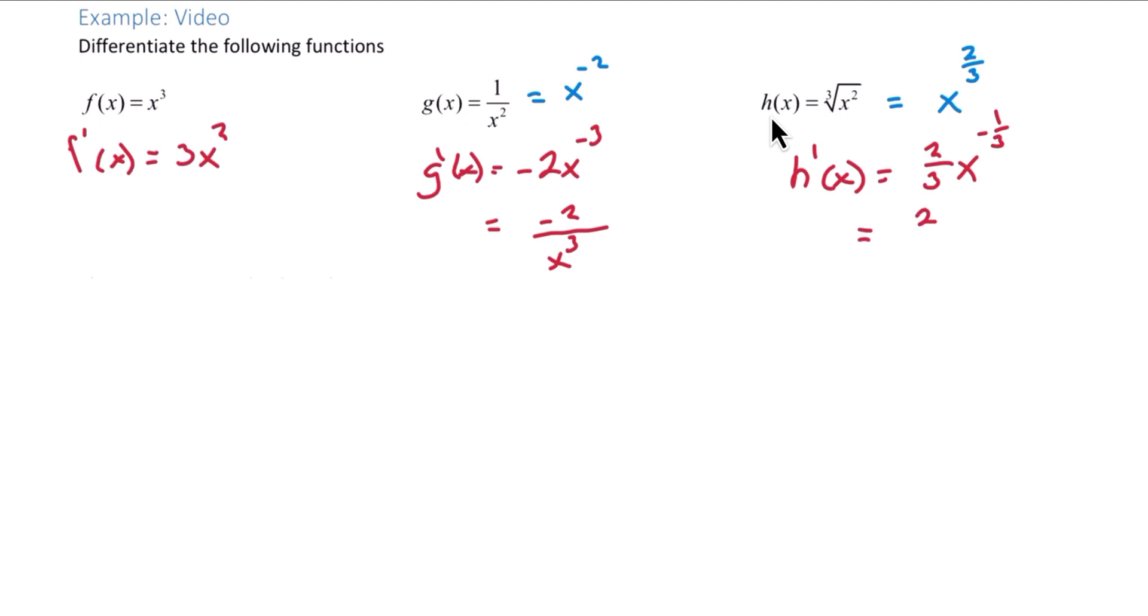We can rewrite it as 2 over 3x to the 1 third power. Or, if we wanted to rewrite that using a radical symbol, that would be 2 over 3 cubed root of x.